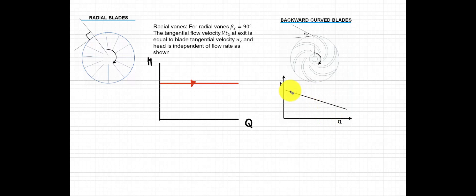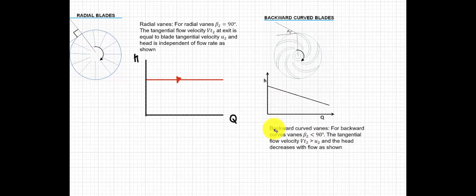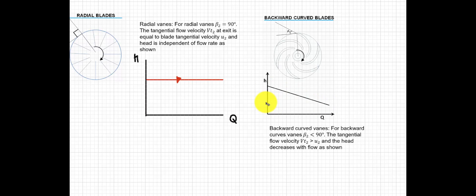It still depends on the manufacturing. Usually, you operate at the required head in the system and the corresponding volume flow rate — if you can push the fluid at that amount and that pressure required by the system. For backward curve veins, the angle is less than 90 degrees. The tangential velocity vt2 is greater than u2, and the head decreases with the flow rate as shown.